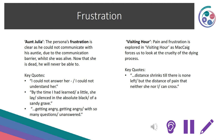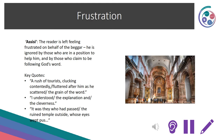In Assisi, the reader is left feeling frustrated on behalf of the beggar — he is ignored by those in a position to help him, and by those who claim to be following God's word. Key quotes: 'A rush of tourists clucking contentedly, fluttered after him as he scattered the grain of the word', 'I understood the explanation and the cleverness', and 'it was they who had passed the ruined temple outside, whose eyes wept pus.' The theme of anger: in Aunt Julia, the narrator is angry because he'll no longer be able to communicate with his auntie, and prior to this couldn't due to the language barrier. Key quotes: 'I could not answer her, I could not understand her', 'she lay silenced in the absolute black of a sandy grave', and 'getting angry, with so many questions unanswered.'